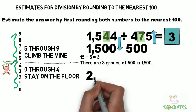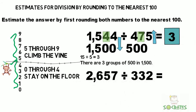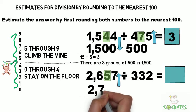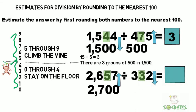Now let's try another. 2,657 divided by 332. So 2,657, the 5 tells us we need to go up. So it'll be 2,700 divided by 332 tells us to go down to 300.